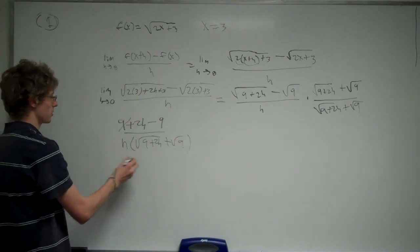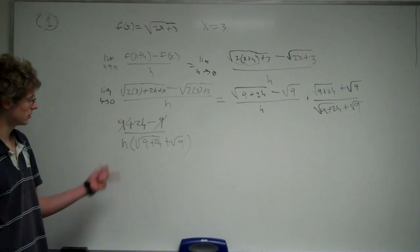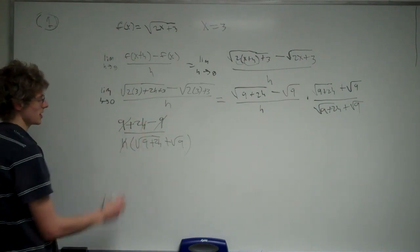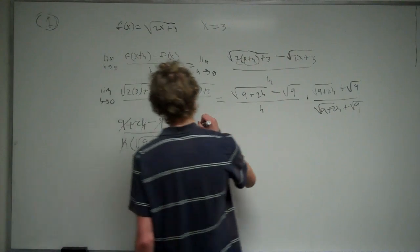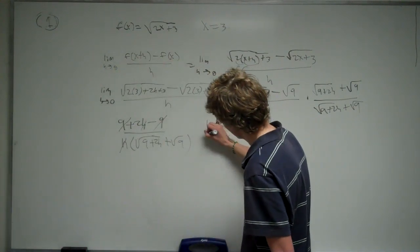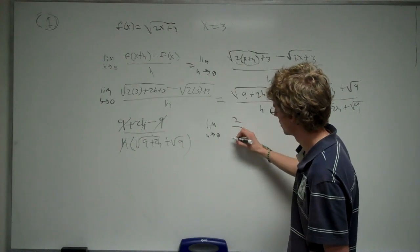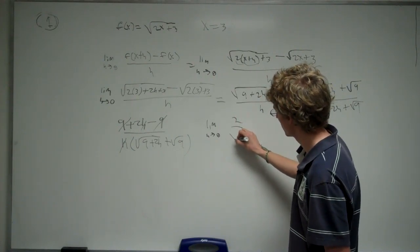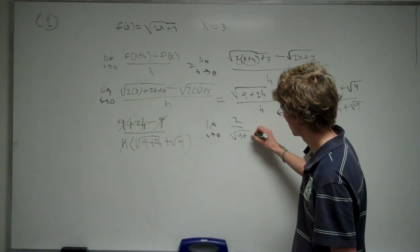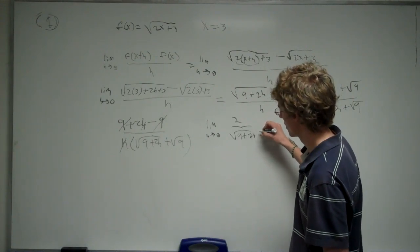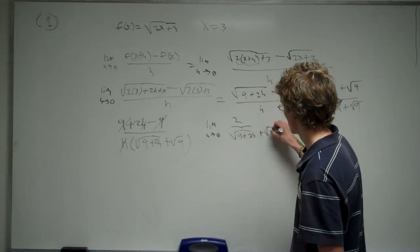Now, this plus 9 and this minus 9, they cancel, this h and this h cancel, and you're left with the limit as h approaches 0 of 2 over the square root of 9 plus 2h plus the square root of 9.